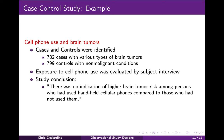An example of a case control study is an investigation into the potential association between cell phone use and brain tumors, published in 2001 in the New England Journal of Medicine. The researchers identified 782 people with various types of tumors as the cases, and 799 people with various non-malignant conditions as the controls. They assessed exposure to cell phone use by interviewing the participants and did not find any evidence for an association between cell phone use and brain tumors.